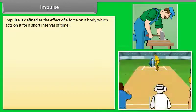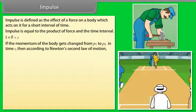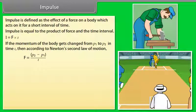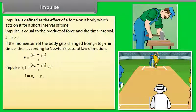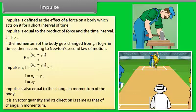Impulse is defined as the effect of a force on a body which acts on it for a short interval of time. Impulse is equal to the product of force and the time interval: I = F × T. If the momentum of a body changes from P1 to P2 in time T, then according to Newton's second law, impulse I = P2 - P1 = ΔP. Impulse is also equal to the change in momentum of the body. It is a vector quantity and its direction is the same as that of change in momentum.